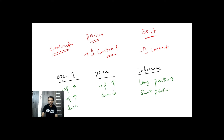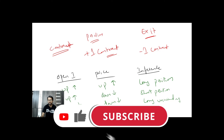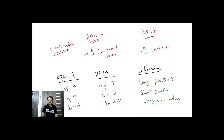If the price comes down and open interest falls, we call this long unwinding. If you are exiting long positions, you are profit booking. But it could also be loss-making when you exit long positions.